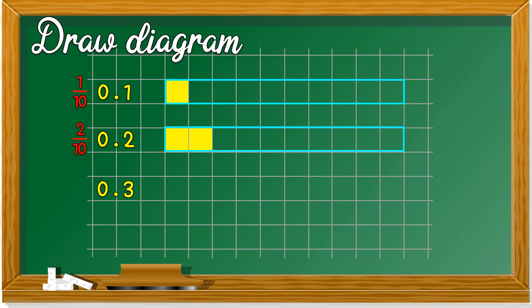0.3, the fraction is 3 over 10. Draw 10 parts and color how many parts? 3. 0.4, fraction is 4 over 10. Out of 10 parts, you color 4.